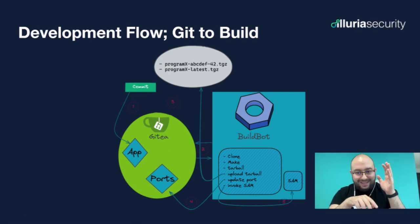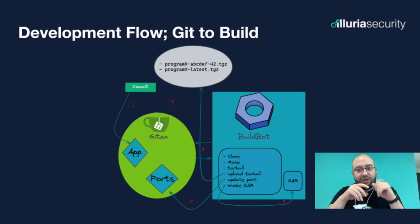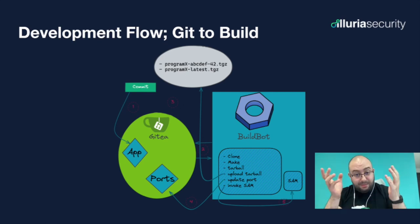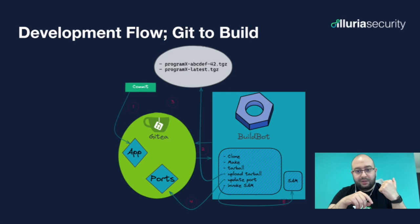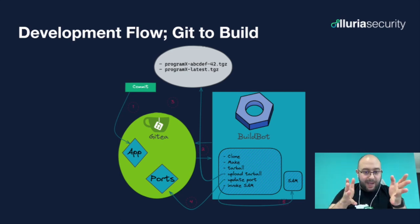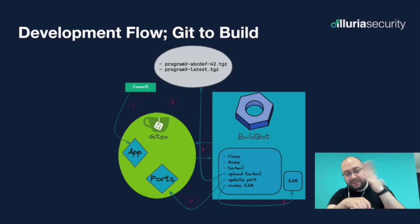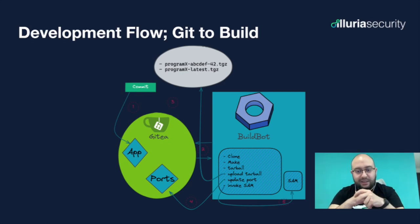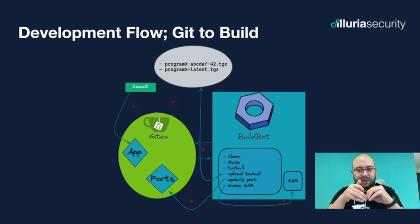What BuildBot does: it clones the repository and runs some make commands. For example, it runs many mix commands for our Elixir projects and many npm commands for our JavaScript projects, which produce a tarball in the case of mix, or a directory that we can tarball in the case of npm run build. We upload that tarball to a web server where the tarball name is the package name followed by a git hash followed by the build number. We also make a symlink to that tarball named the package name followed by 'latest'. We then use the git hash and build number to update the ports, and invoke SAM — which means shake and make.